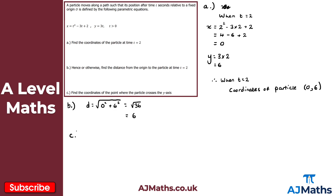For part c, we need to find the coordinates of the point where the particle crosses the y-axis. If we think about where the particle crosses the y-axis — that's along the vertical axis — that happens when x equals 0. So the particle crosses the y-axis when x equals 0.